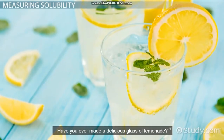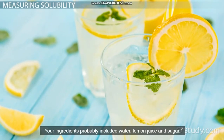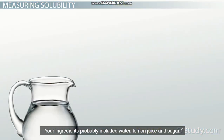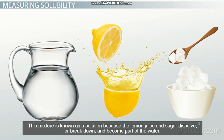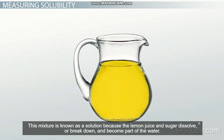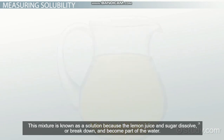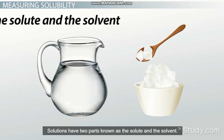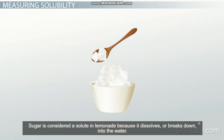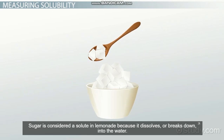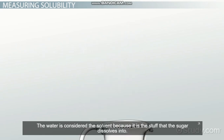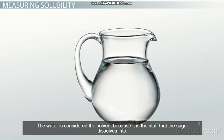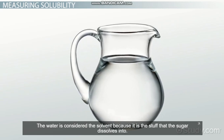Have you ever made a delicious glass of lemonade? Your ingredients probably included water, lemon juice, and sugar. This mixture is known as a solution, because the lemon juice and sugar dissolve, or break down, and become part of the water. Solutions have two parts, known as the solute and the solvent. Sugar is considered a solute in lemonade, because it dissolves, or breaks down, into the water. The water is considered the solvent, because it's the stuff that the sugar dissolves into.